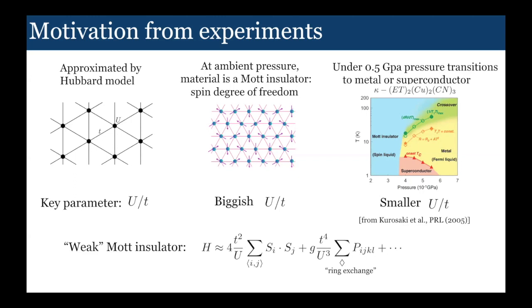If we want to map the system back to spin degrees of freedom, in addition to the first order in T over U term, which is the Heisenberg exchange, higher order fluctuations in T over U would lead to more complicated magnetic interactions. The first one is this ring exchange which takes four spins and exchanges them. But then there would be more terms of higher order in T over U, and presumably these are actually playing a quite important role in the magnetic physics.